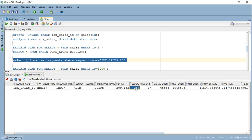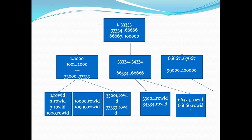There is a popular misconception that B-tree index stands for 'binary tree index' — that is not the case. B-tree index is called 'balanced tree index' for a reason: in order to reach to the lowest level, you have to traverse the same number of blocks. Let's understand what that means.